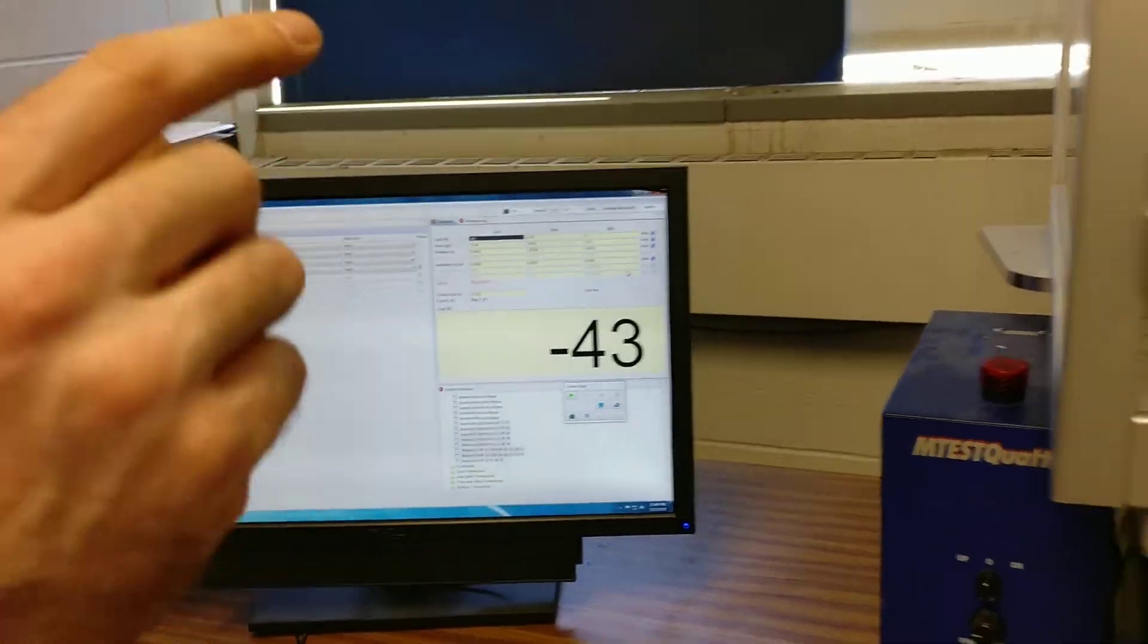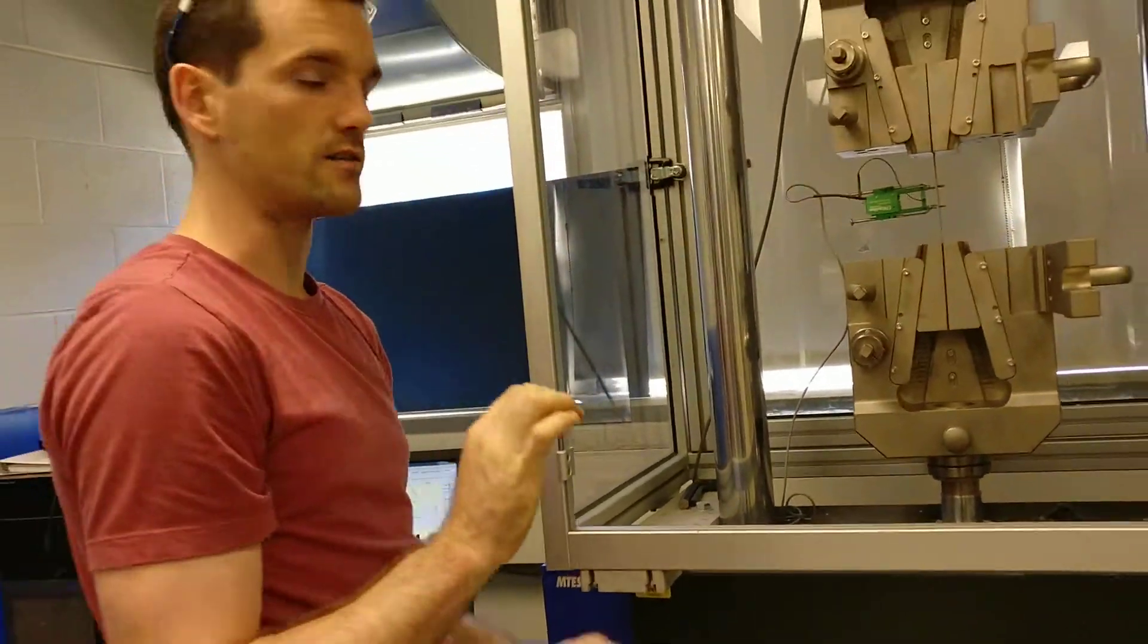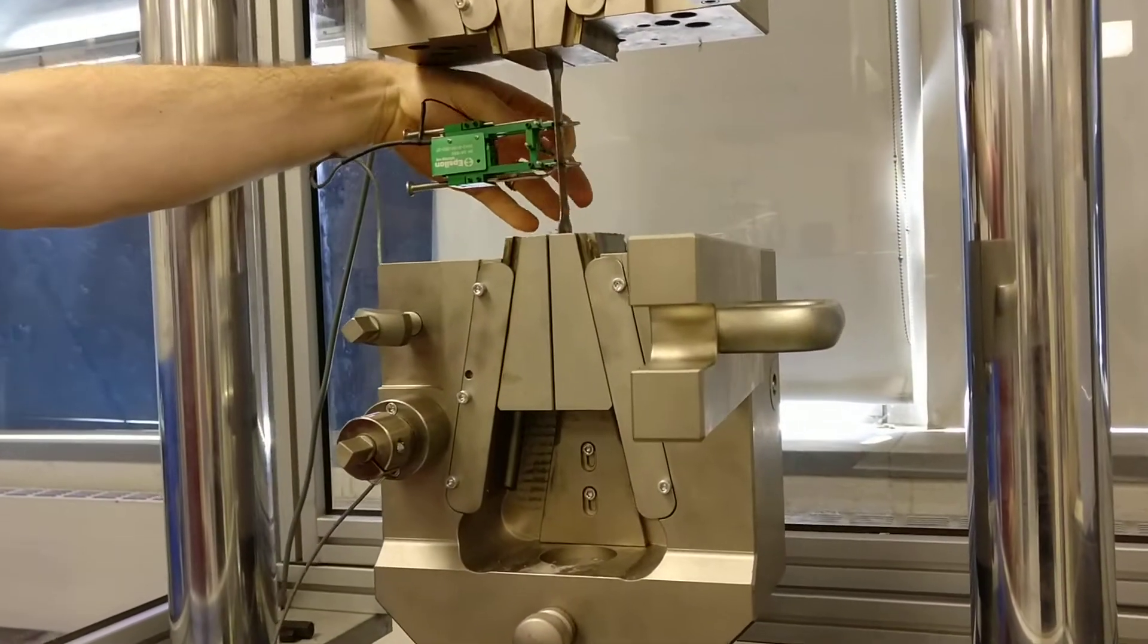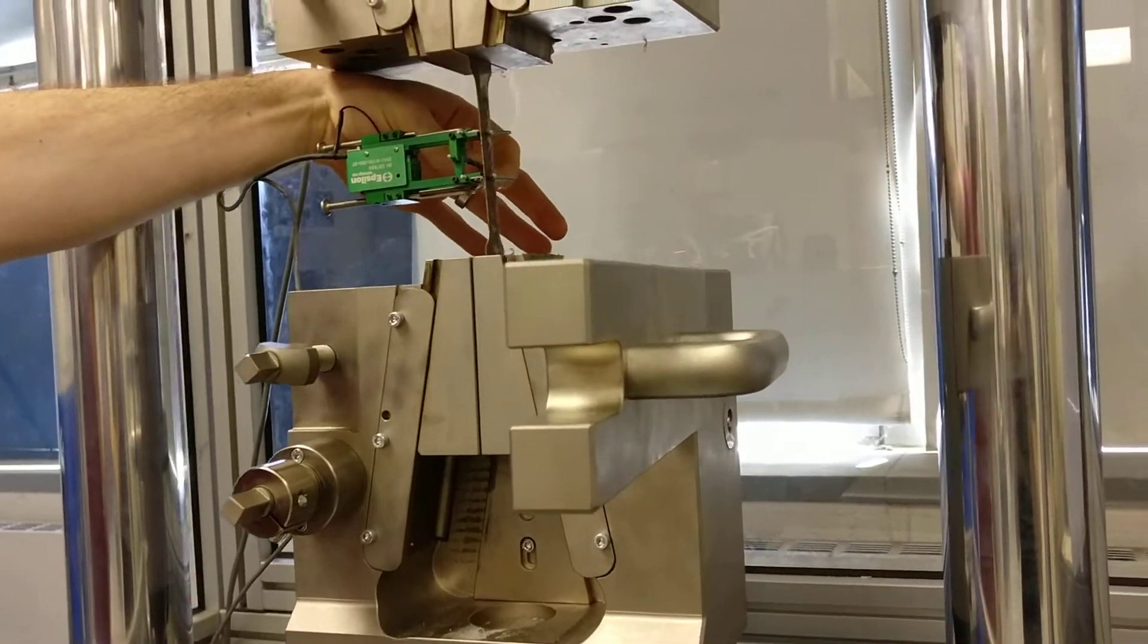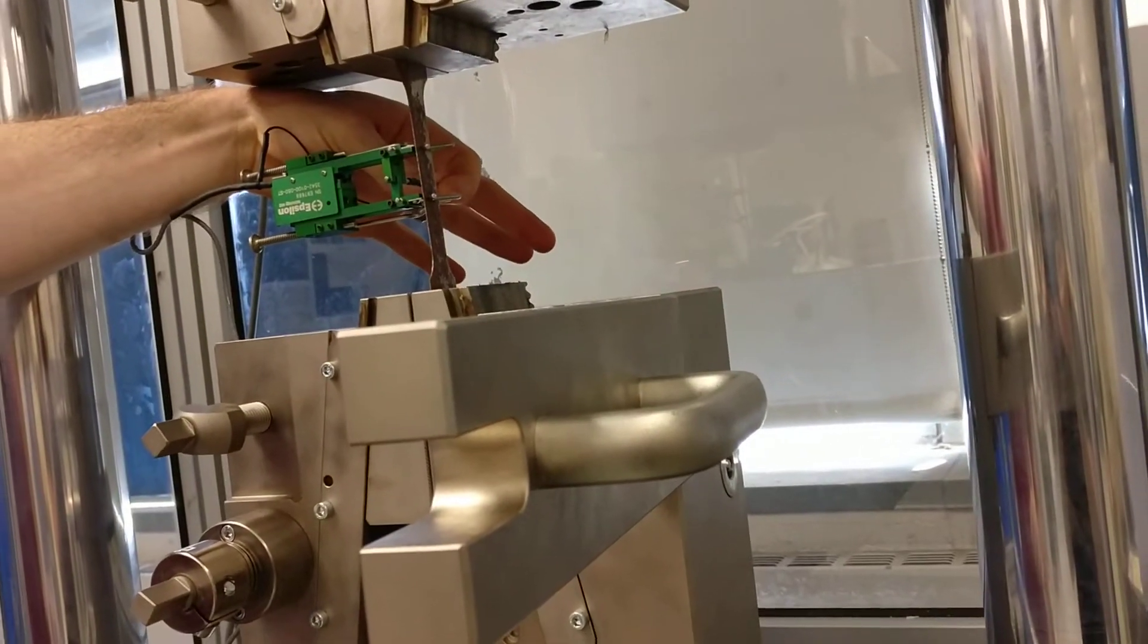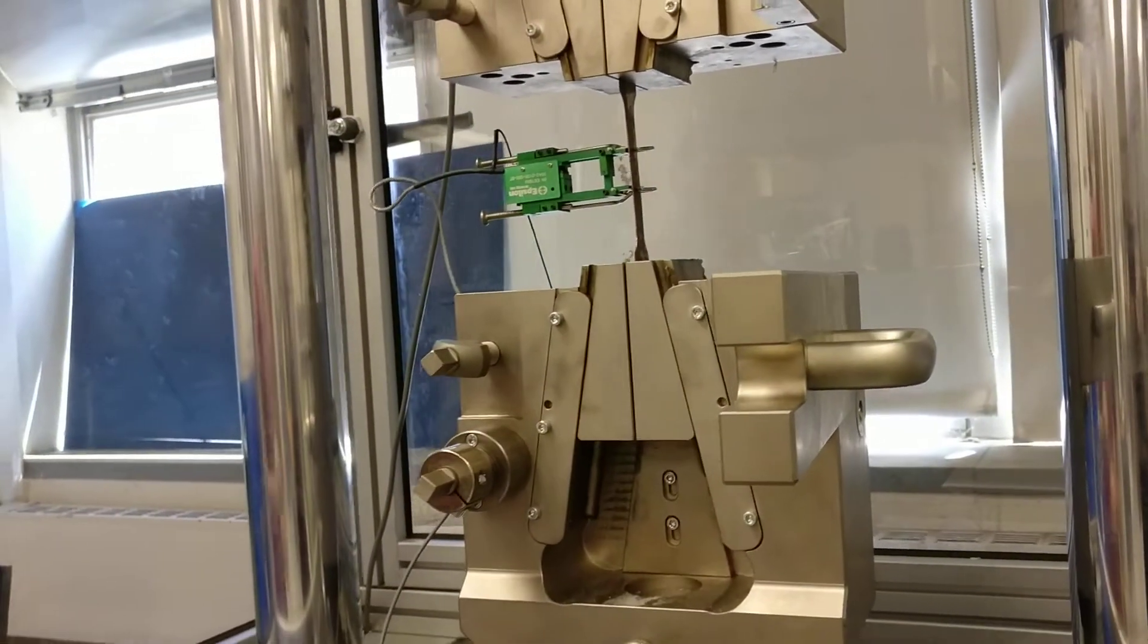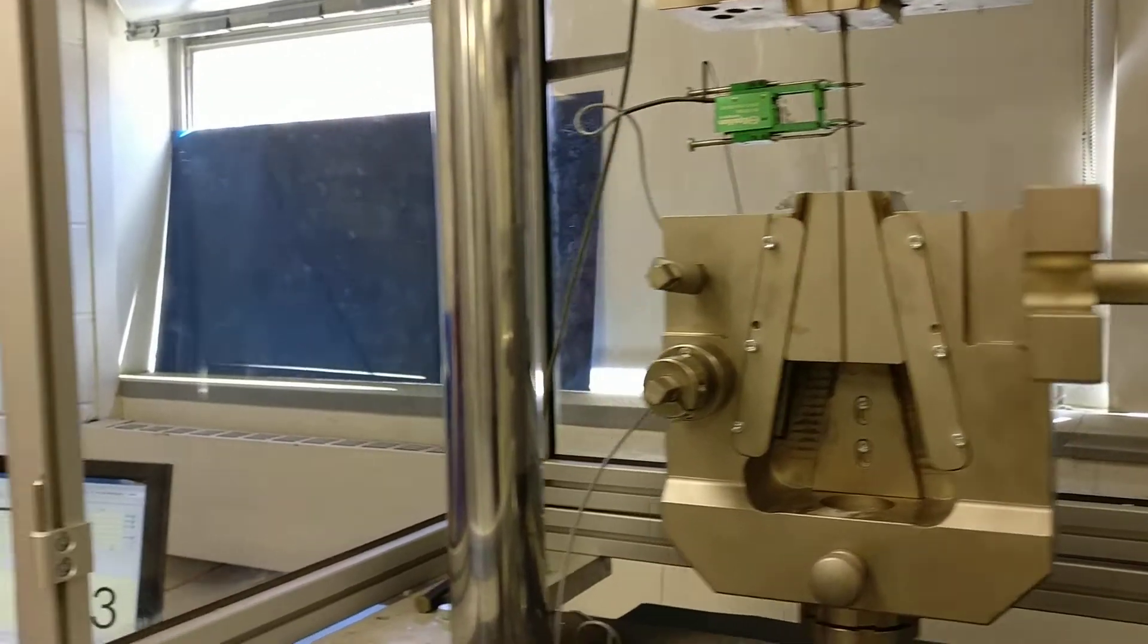The next thing we'll do is we'll remove the pin from the extensometer, just a little black thing that's in the back, and lets it travel. So we want to make sure that it is put in there when we clamp the sample. But after that, we can pull that pin and just let it hang. And then we can start pulling the sample.